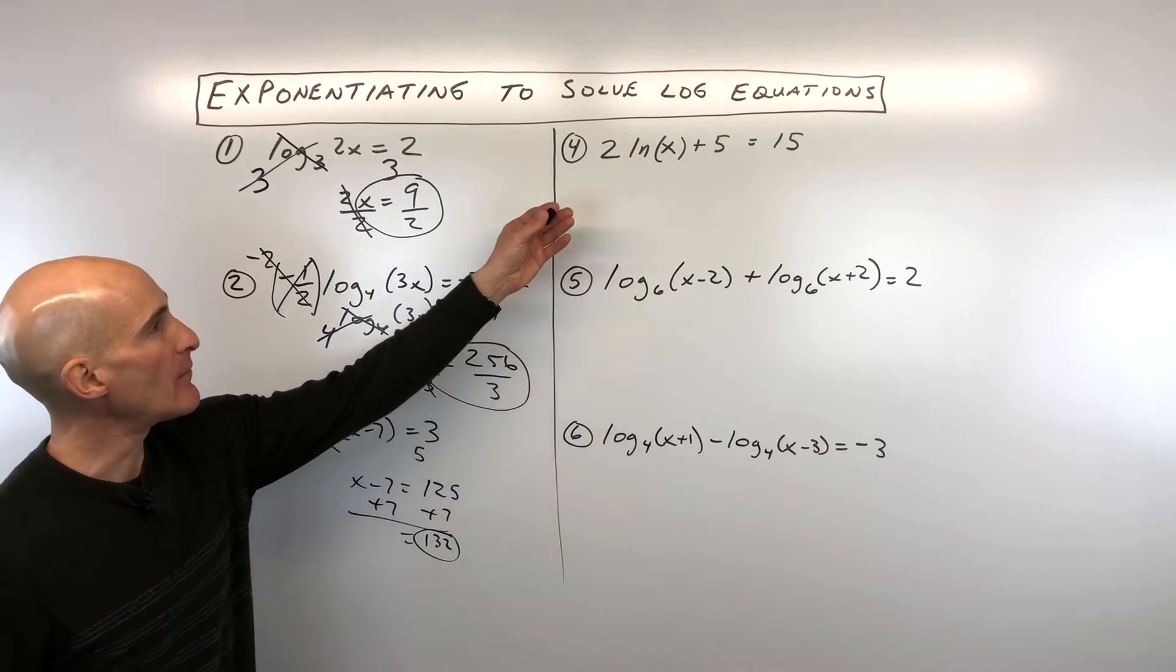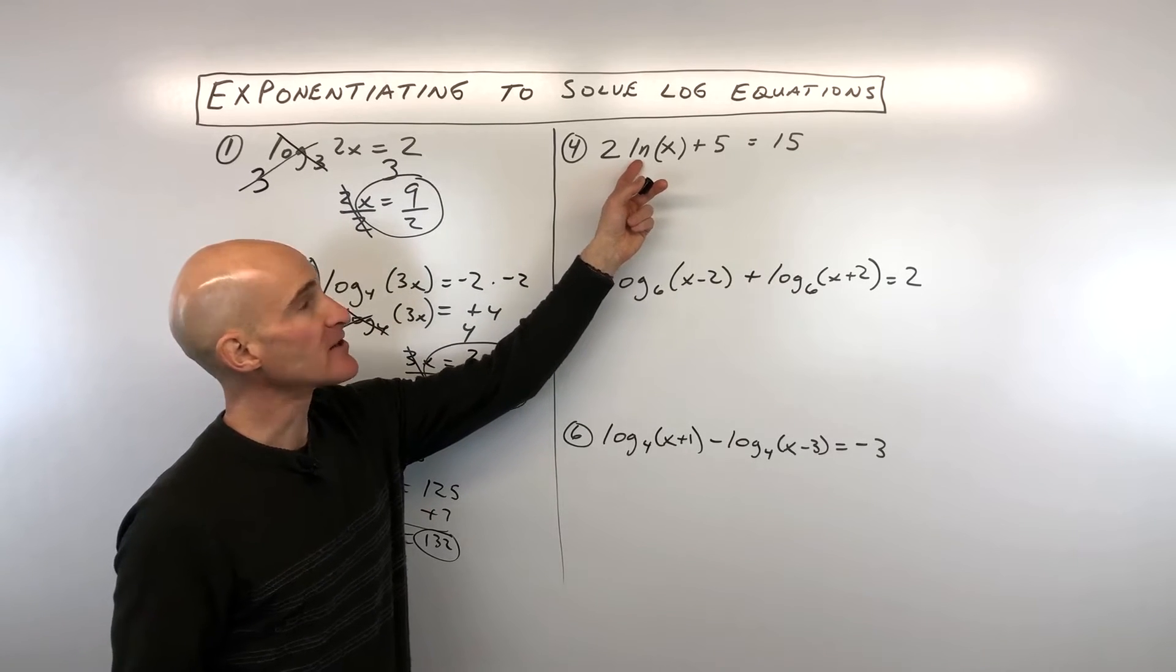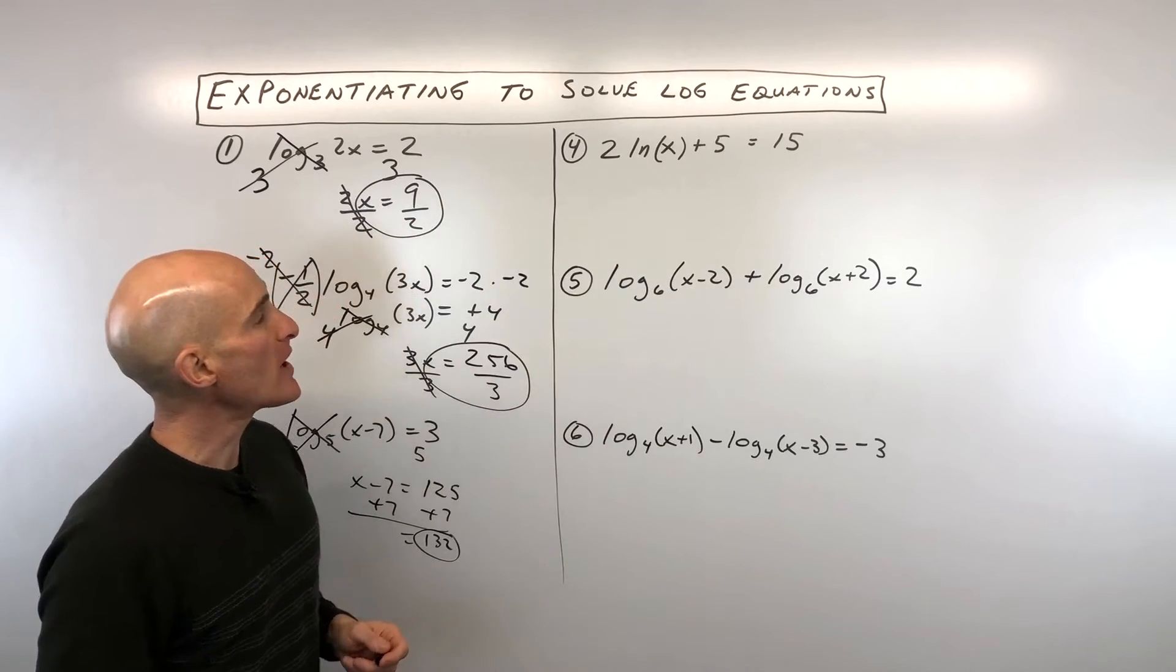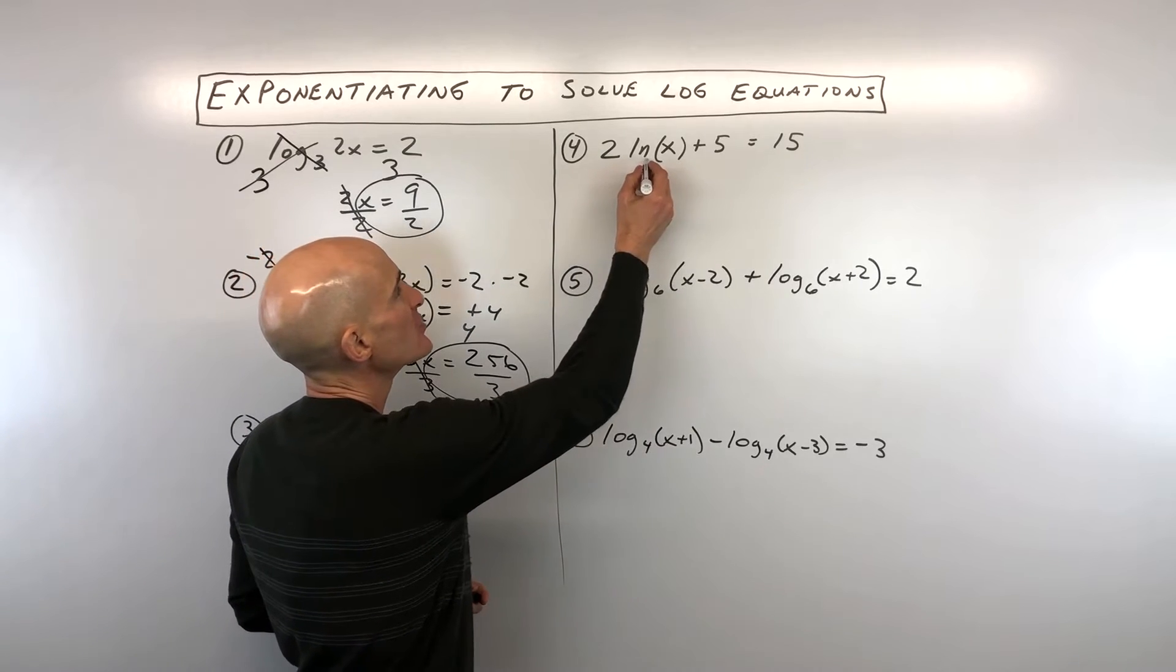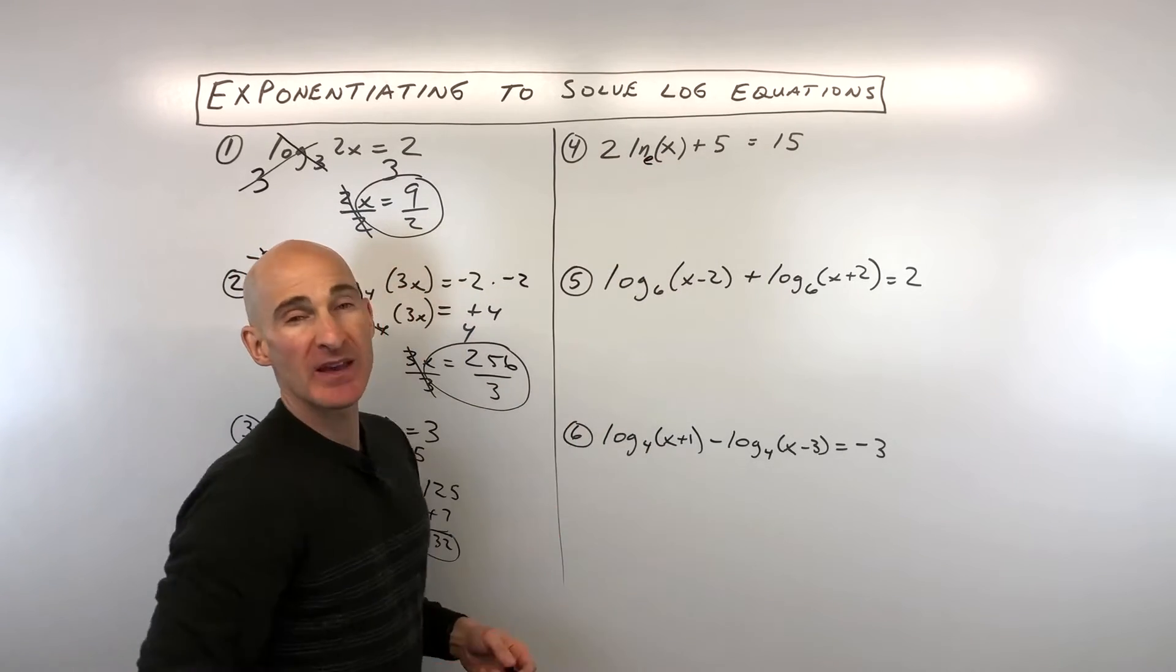So we've got three more examples. Now we're switching gears. We're working with natural log. See the ln here? Now, they don't write it, but it's understood to be base E. So this is log base E when you see the ln.